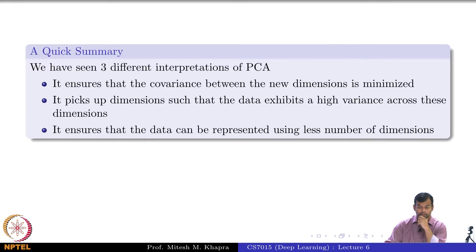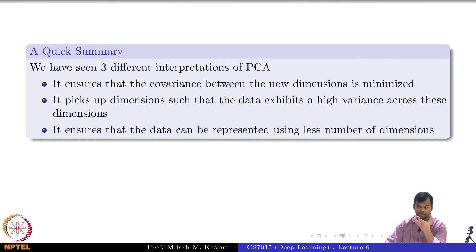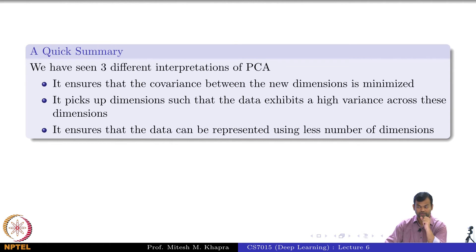To connect this to things we need later on for autoencoders: we are trying to learn a new representation for the data, and we are also trying to compress the data. We want this compression to be as lossless as possible — going from n dimensions to k dimensions while still retaining the essence of the data and not losing out on much of the information.